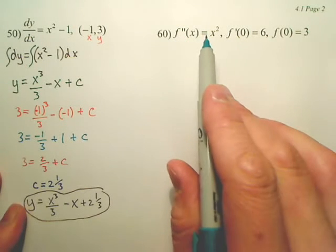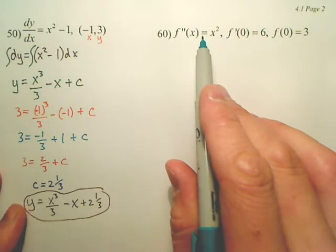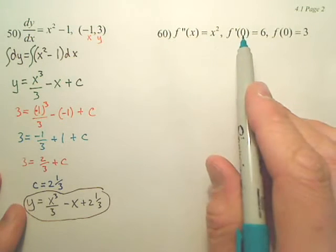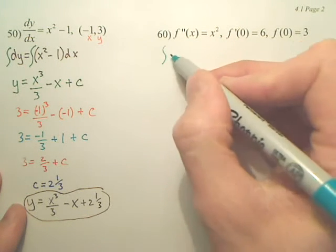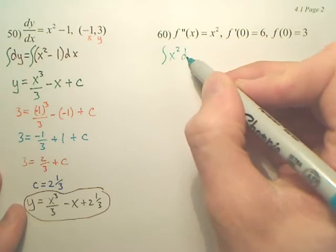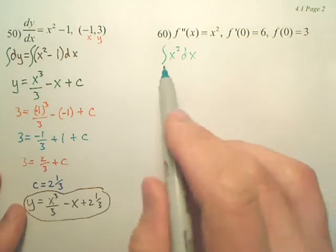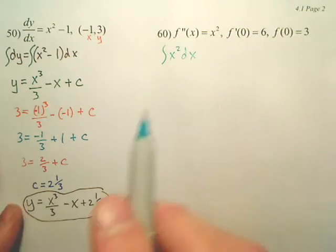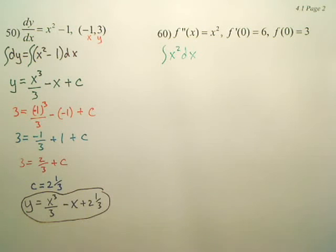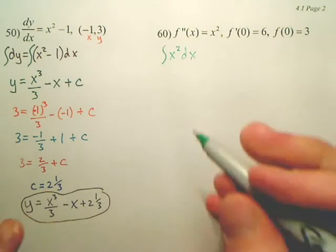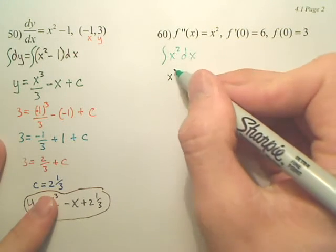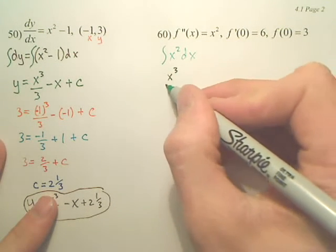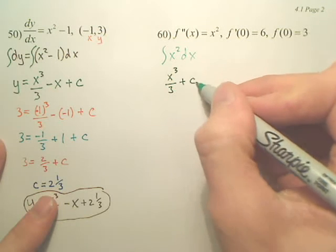We're starting with the second derivative. I first want to go to the first derivative, so to work my way back I basically need to integrate x squared and write it as dx. I'm going to integrate this — that will get me back to my first derivative. The integral of this would simply add 1 and divide by it, plus c.